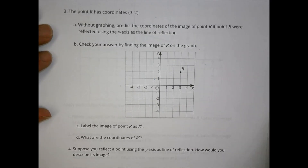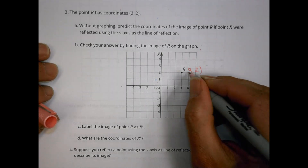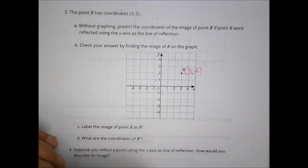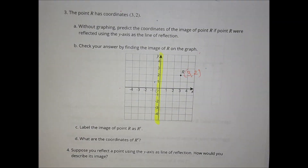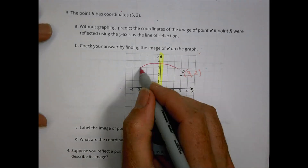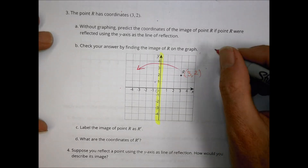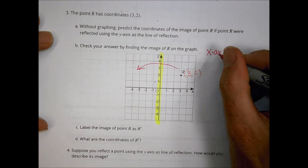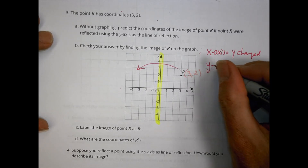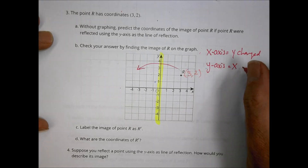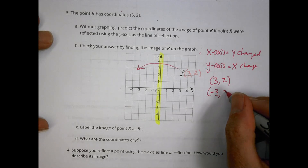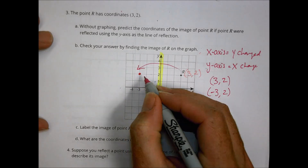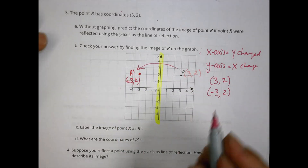For problem 3, point R is at 3, 2. Without graphing, predict the coordinates if R is reflected across the y-axis. When we reflected across the x-axis, the y changed. So reflecting across the y-axis, the x should change. Starting at 3, 2, the reflection gives us negative 3, 2 — and that's where R prime lands.